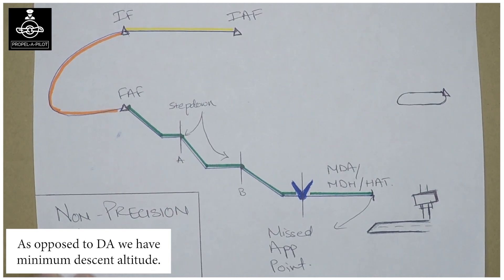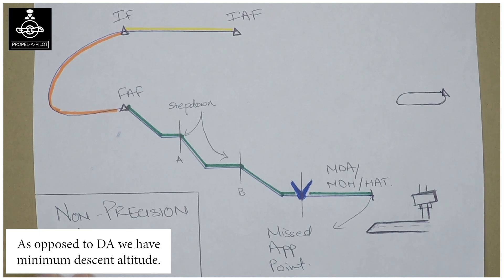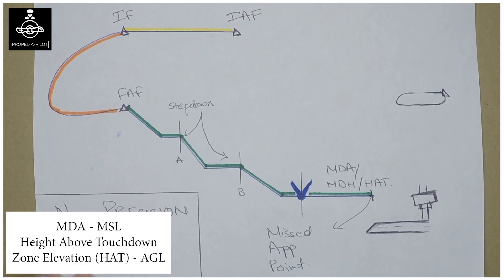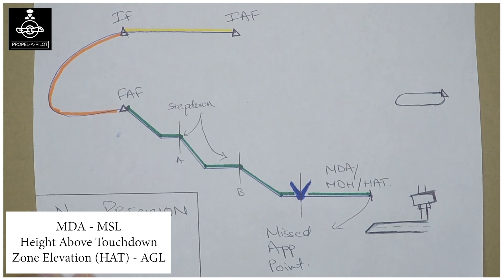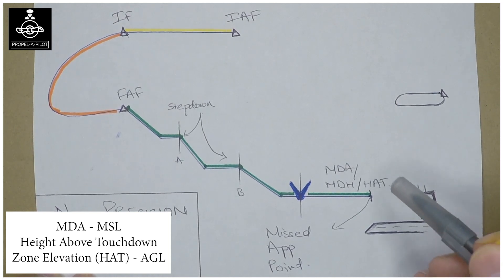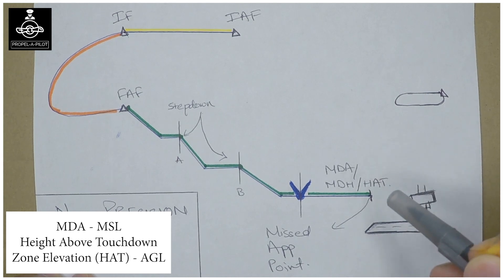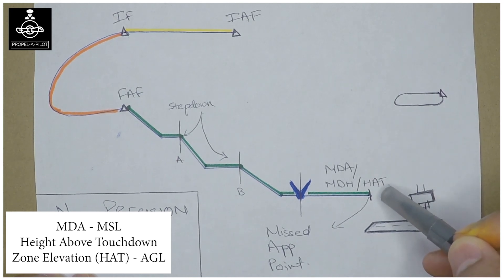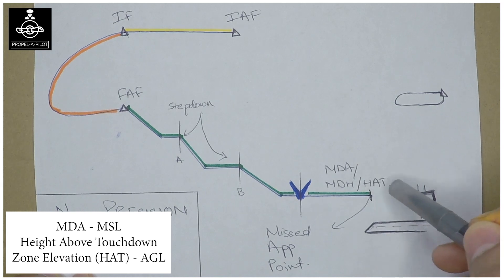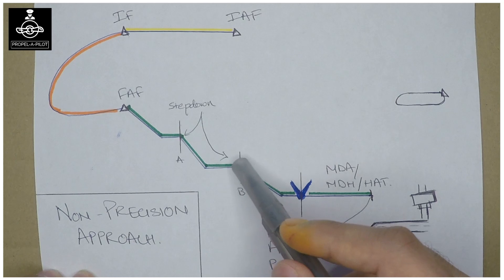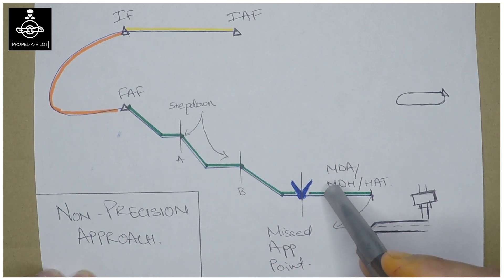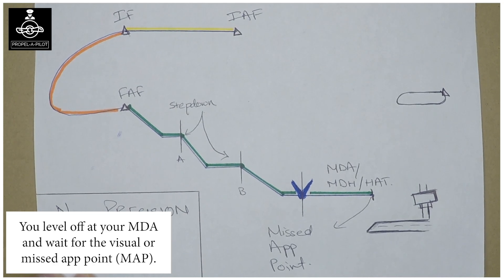Minimum descent altitude is the minimum altitude you descend down to on a non-precision approach. When expressed in a geodetic level, it can also be called minimum descent height, or the technical term is height above touchdown zone elevation. Height above touchdown zone elevation is minimum descent altitude expressed in a geodetic level — in other words, minimum descent altitude is height above touchdown zone expressed in feet MSL.